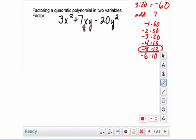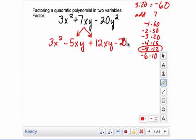What you're going to do is rewrite this middle term 7xy using the negative 5 and the positive 12. So we rewrite our other terms: 3x squared minus 5xy plus 12xy minus 20y squared. And then you're going to group and then common factor out of each group.